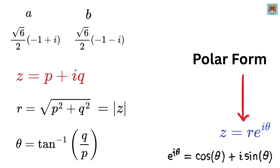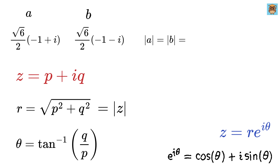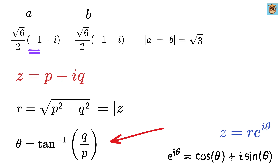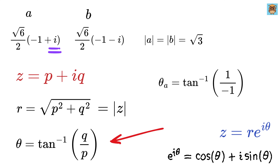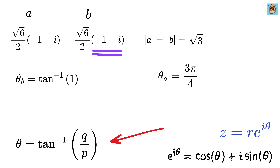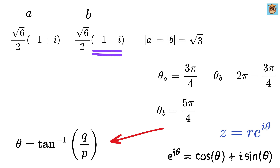The modulus of both a and b equals root 6 over 2 times the square root of minus 1 whole squared plus 1 squared, which is root 6 over 2 times root 2, turning out to be root 3. Then comes the angle. For a, the angle lies in the second quadrant because the real part is negative and the imaginary part is positive. So we take tan inverse of 1 over minus 1, which gives minus 1, and in the second quadrant this corresponds to 3 pi by 4. Similarly, for b, we take tan inverse of minus 1 over minus 1, which gives positive 1. Because this is in the third quadrant, this corresponds to 5 pi by 4, which we can also rewrite as 2 pi minus 3 pi by 4.